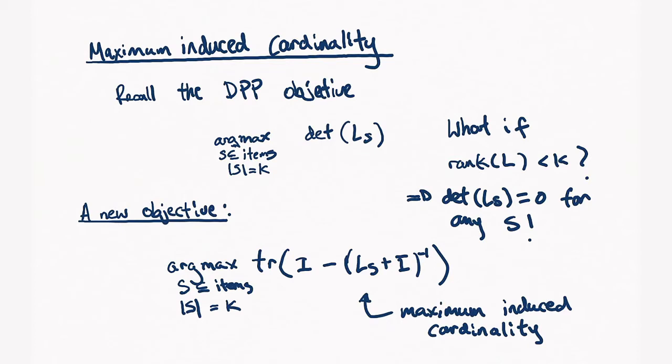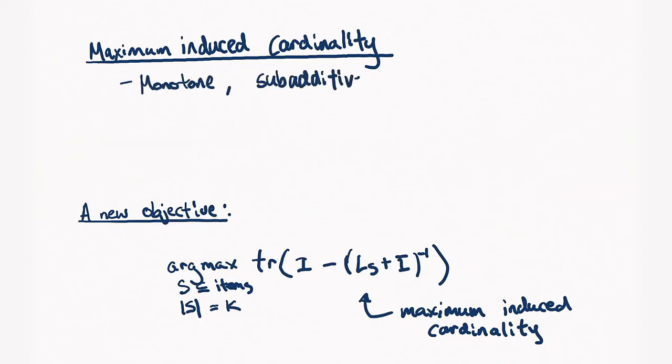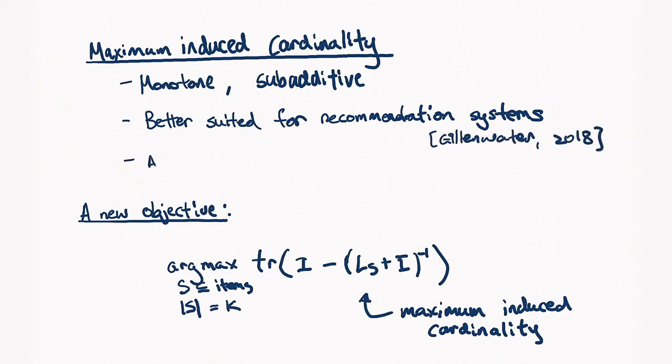So, what are the advantages of this maximum induced cardinality objective? Aside from being better conditioned than the previous objective, it is also monotone and subadditive. This means that it's better suited for the recommendation settings because the more items you add to your set, the larger this objective gets, which coincides with our intuition that more items mean more diversity. And, as we said before, it avoids the ill-defined solutions when the rank of L is low.